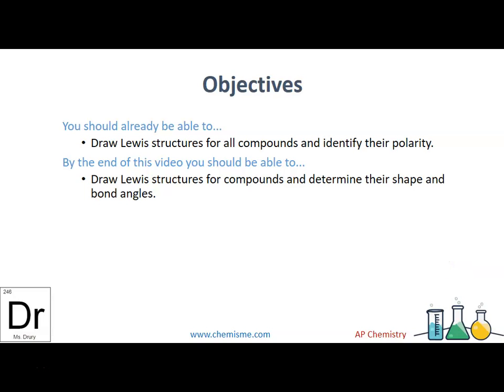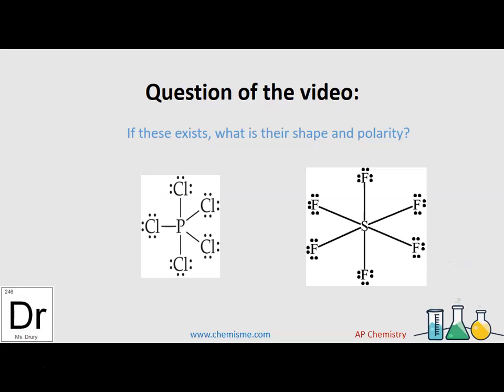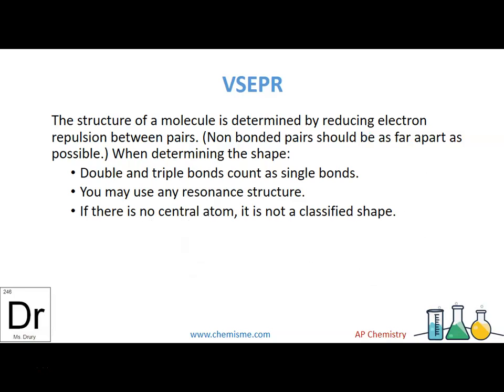This video is about the VSEPR theory. You should already be able to draw Lewis structures for any compound and identify its polarity, but we're also going to cover shape and bond angles. The question in the video is, if these exist, what are their shapes and polarities?